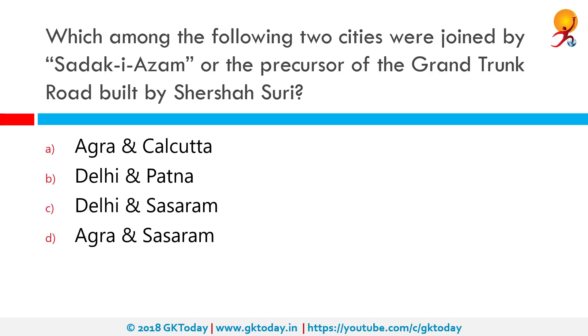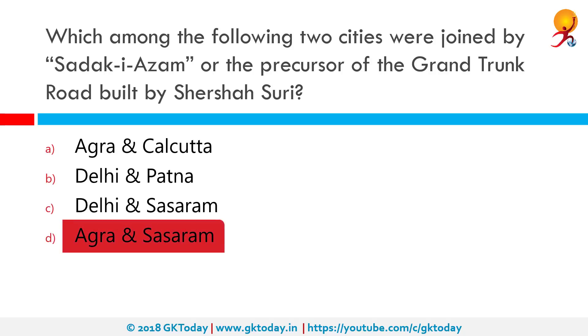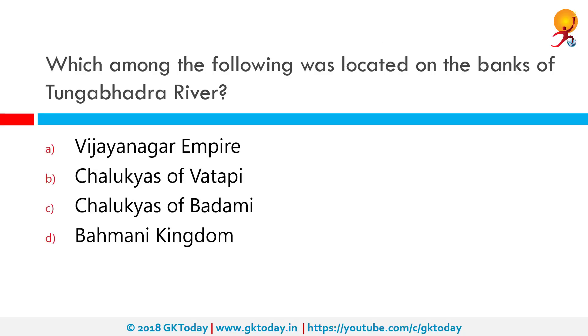Which among the following two cities were joined by the Sarakiyasan, or precursor of the Grand Trunk Road, built by Sher Shah Suri? The correct answer is Agra to Sasaram.